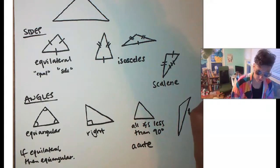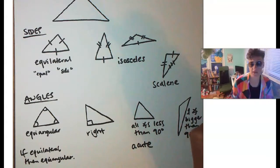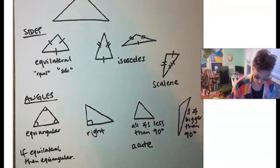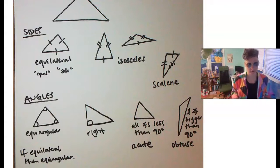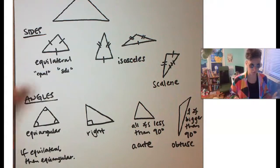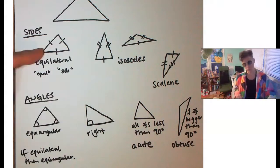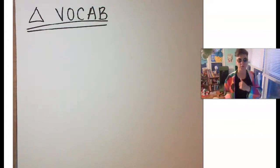Or we have one angle that's bigger than 90 degrees — that is called an obtuse triangle. So again, every triangle has two names: one talks about its sides and one talks about its angles. If the triangle is equiangular it will be equilateral, and if equilateral it will be equiangular.